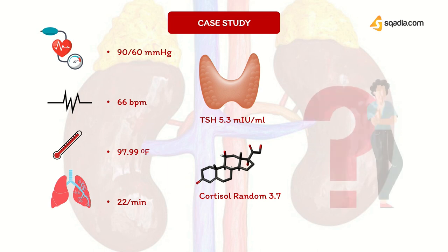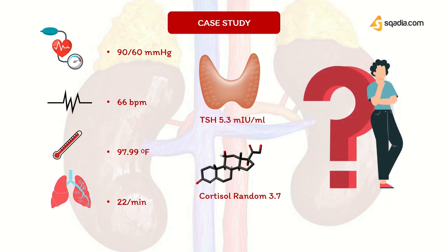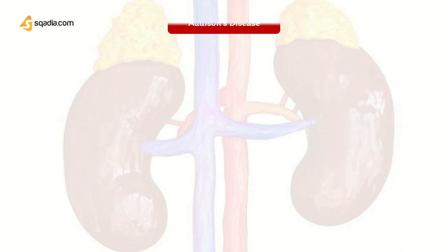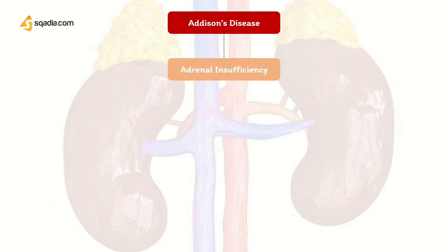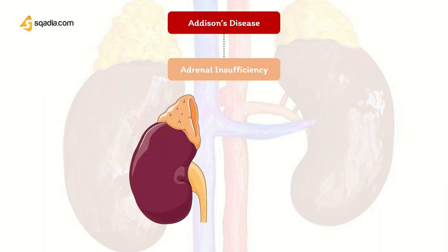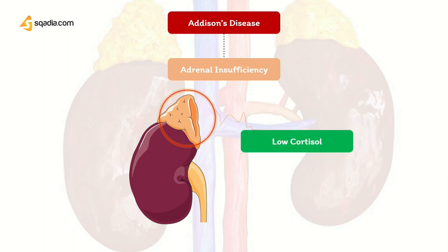You question yourself: what is Addison's disease? Addison's disease is also called adrenal insufficiency. In Addison's disease, your adrenal gland, which is located just above your kidneys, produces too little cortisol and often too little aldosterone.